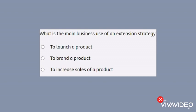Here is another question: what is the main business use of an extension strategy? The answer is to increase the sales of a product. Because if there is an extension strategy, the sales of the product will increase and the product lifecycle will not go into the decline stage.